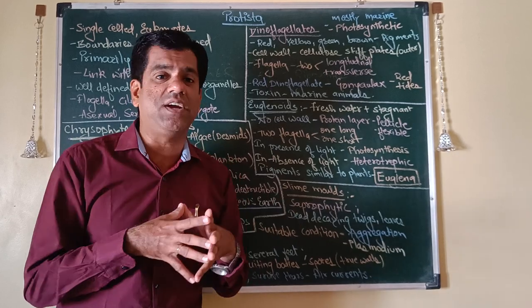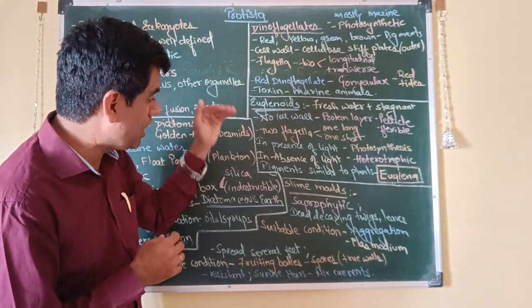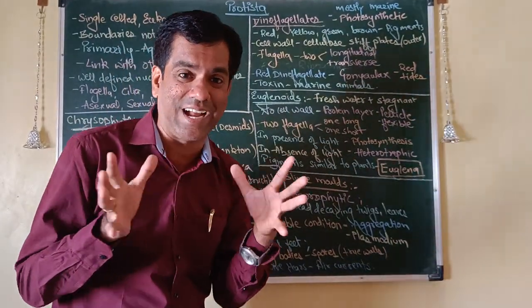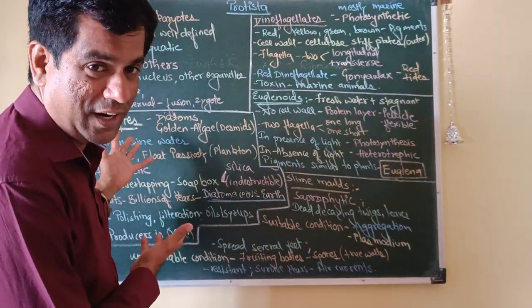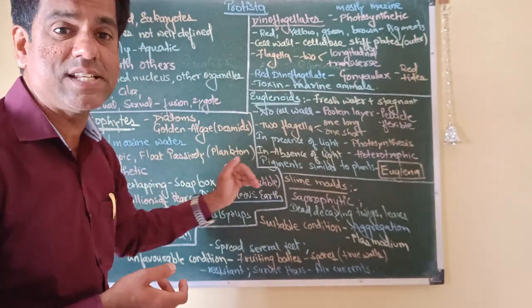One by one, these Protists are classified as your chrysophytes, dinoflagellates, euglenoids, slime molds. No place for protozoa, but we will catch them up in the next video. You have chrysophytes, dinoflagellates, euglenoids, and slime molds.